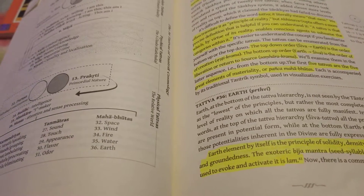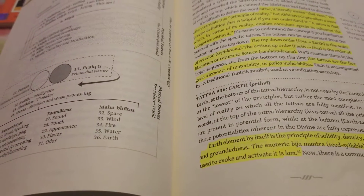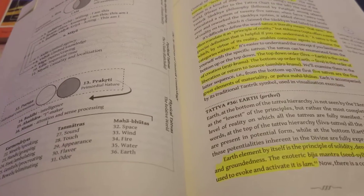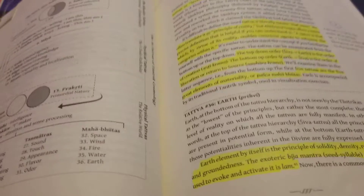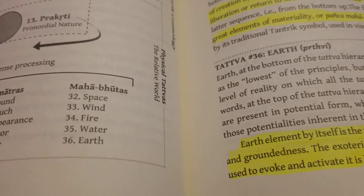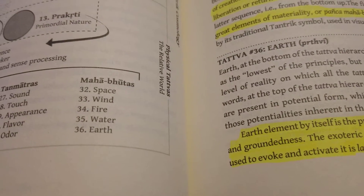Today we're actually going to talk about the Pancha Mahabhutas. These are the five elements that we see spoken of in Western ceremonial magic and paganism, many other traditions. This is the earth, air, fire, water, spirit that you will see symbolized with the pentagram. The same similar elements, basically the same thing over here in either Sankhya or non-dual Shaiva Tantra. And these elements are Akasha, Vayu, Agni, Jala, and Prithvi.